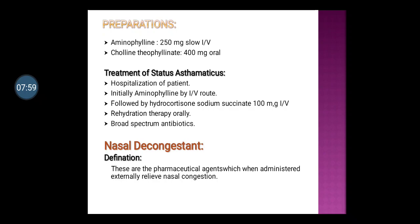Treatment of status asthmaticus: First, hospitalization of the patient. Initially, aminophylline is given by IV route, followed by hydrocortisone sodium succinate 100 mg IV. Then rehydration therapy is given orally. Broad-spectrum antibiotics are also taken in status asthmaticus treatment.